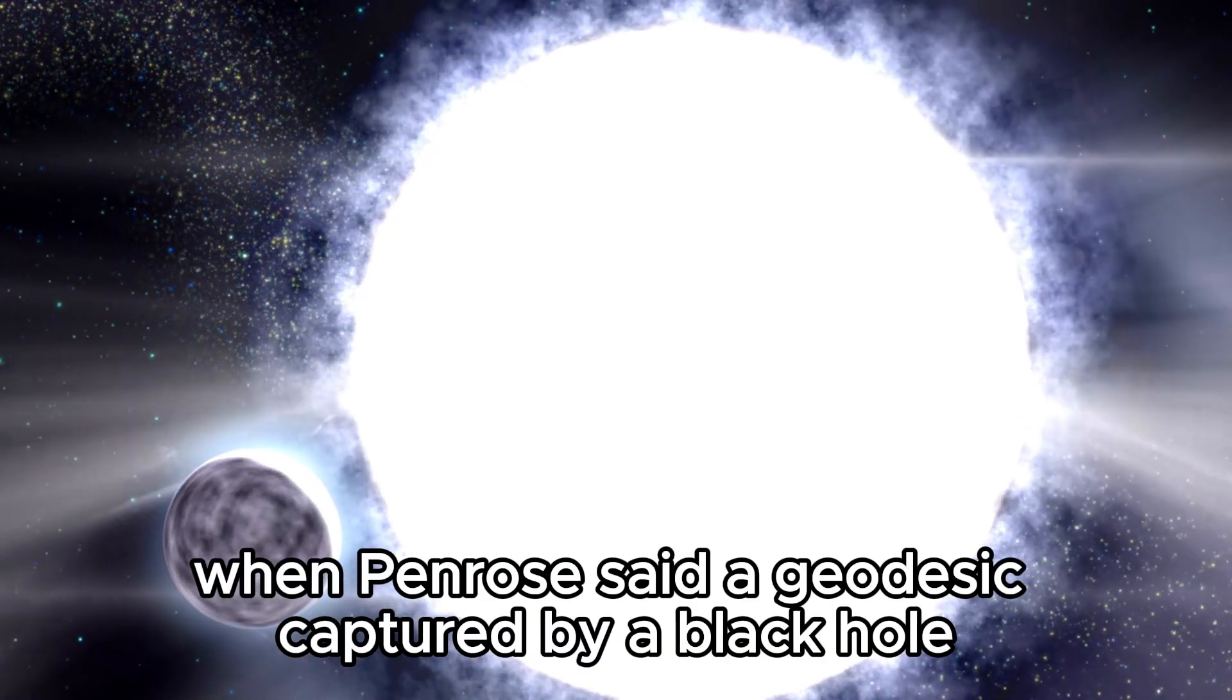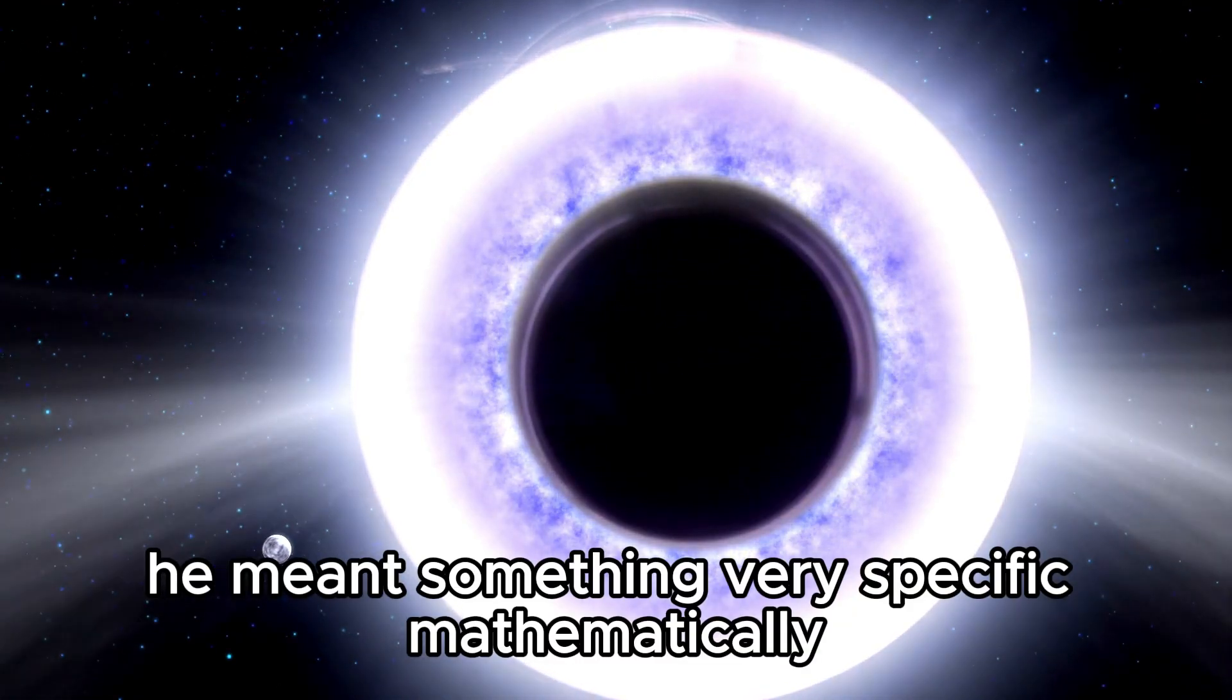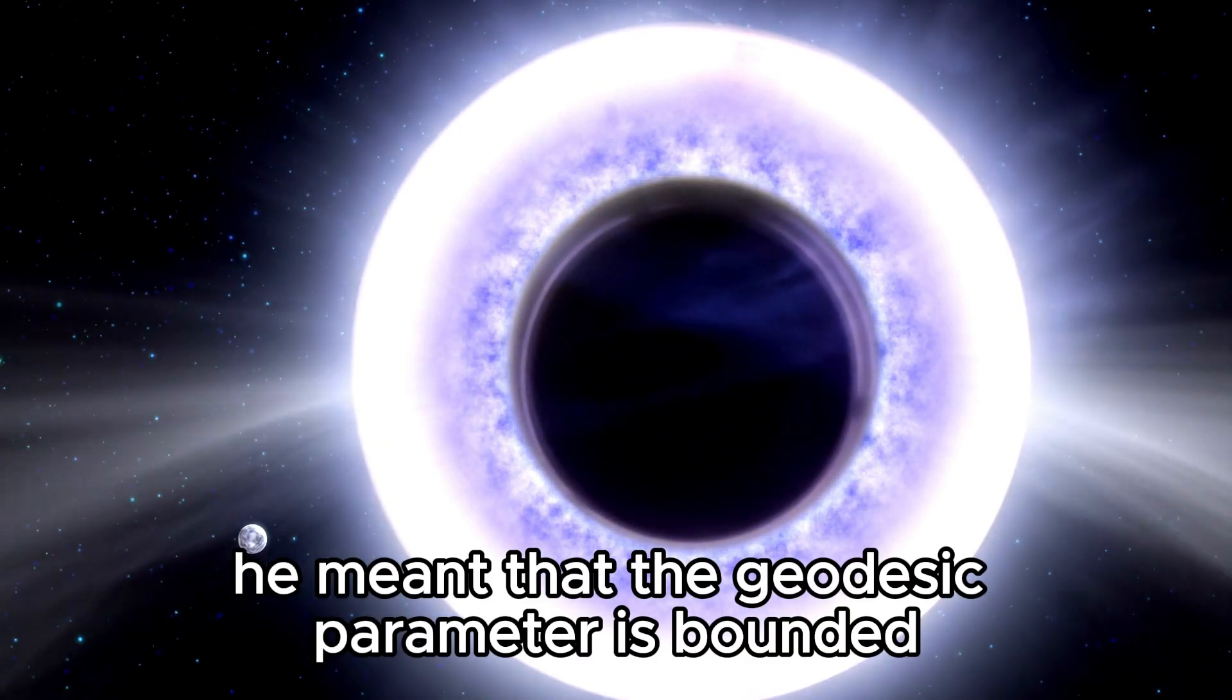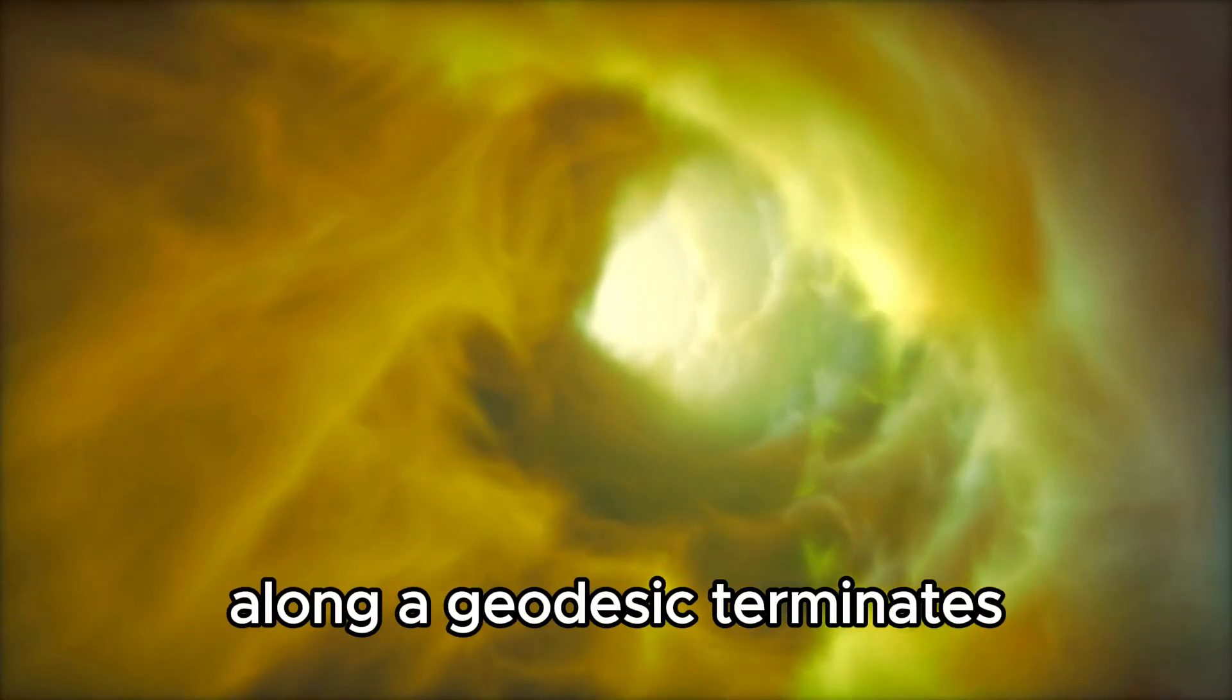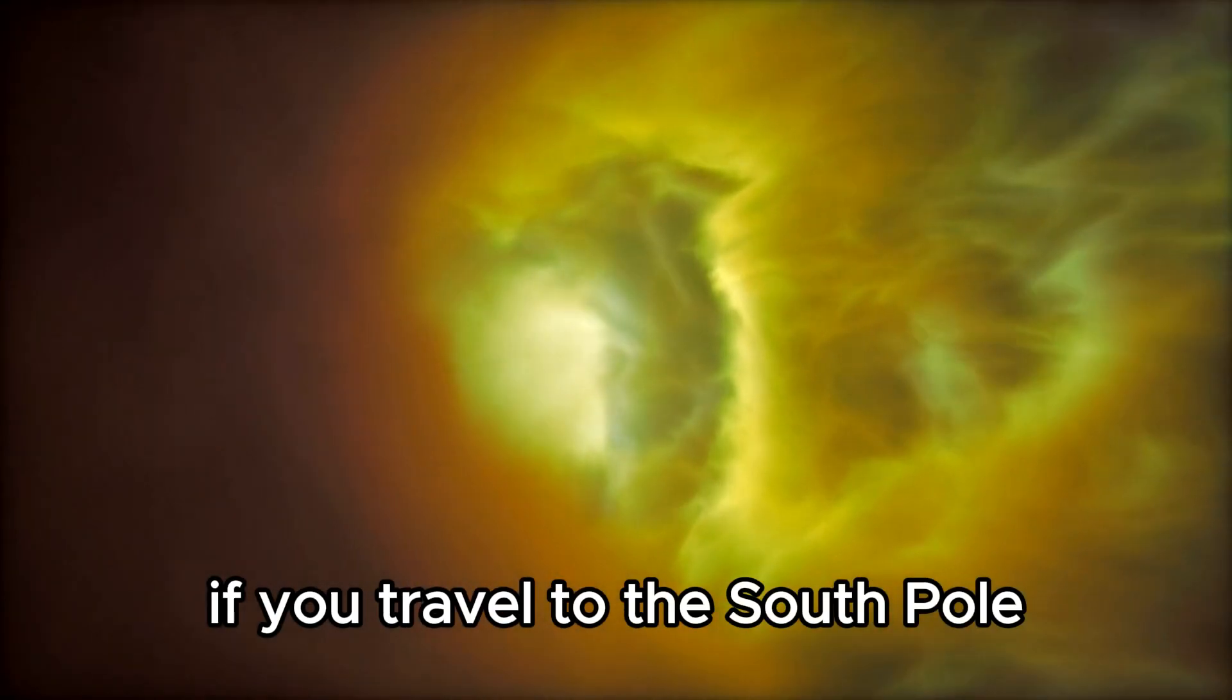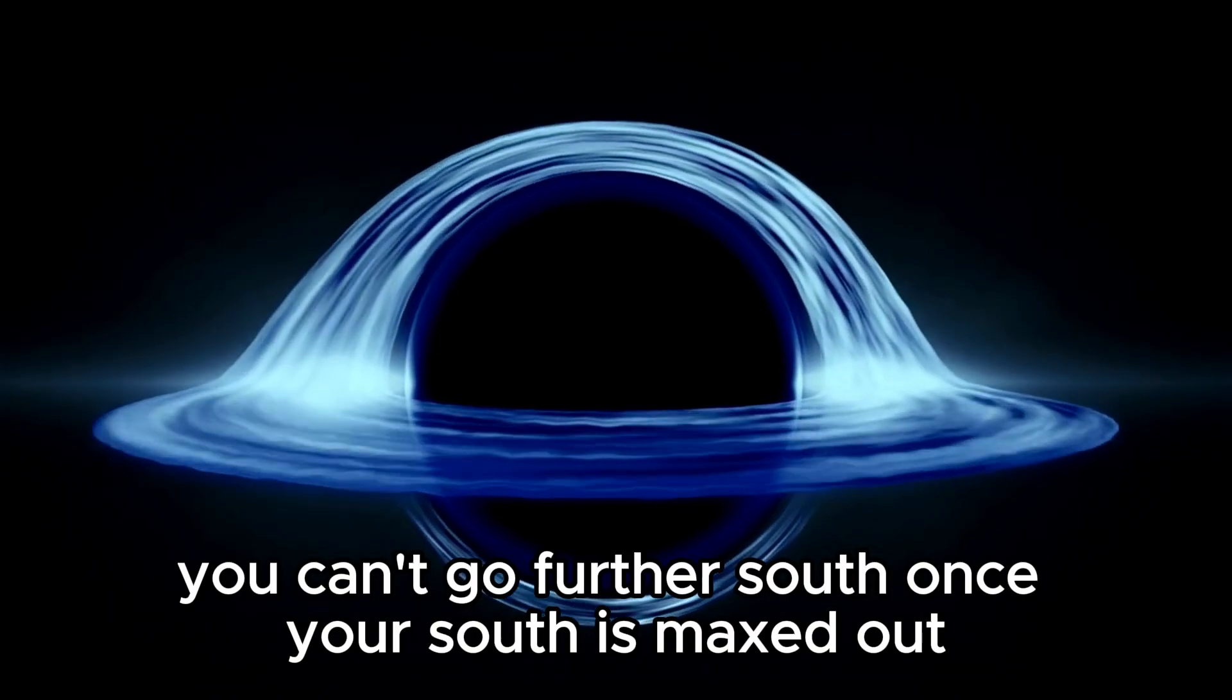When Penrose said a geodesic captured by a black hole ends at the black hole center, he meant something very specific mathematically. He meant that the geodesic parameter is bounded, so the mathematical variable we use to describe the evolution of something along a geodesic terminates, similar to how your latitude terminates if you travel to the south pole. You can't go further south once your south is maxed out.